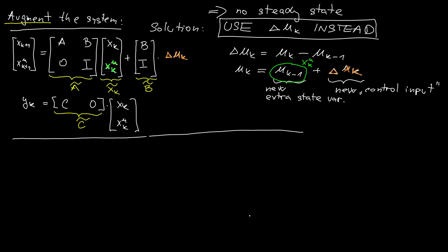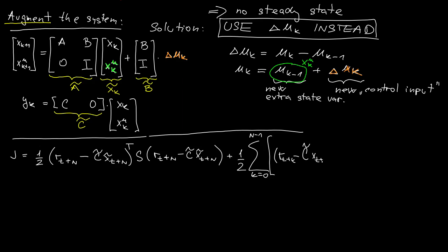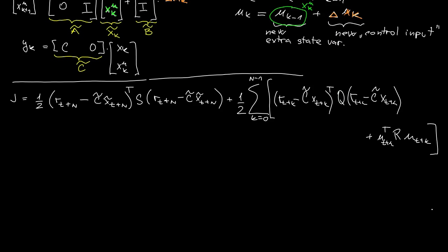And now with this new model I will express the outputs in the following way with the C tilde matrix. And now with this new state space model I will write down the optimization cost as the term corresponding to the regulation error in the final time, plus the so-called running costs between the initial and final time. Now plus the term corresponding to the increment of u.